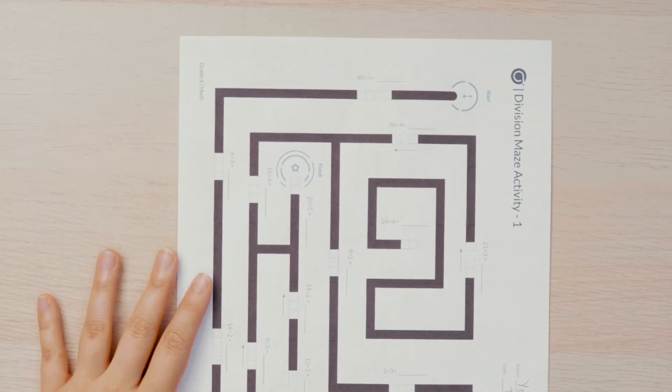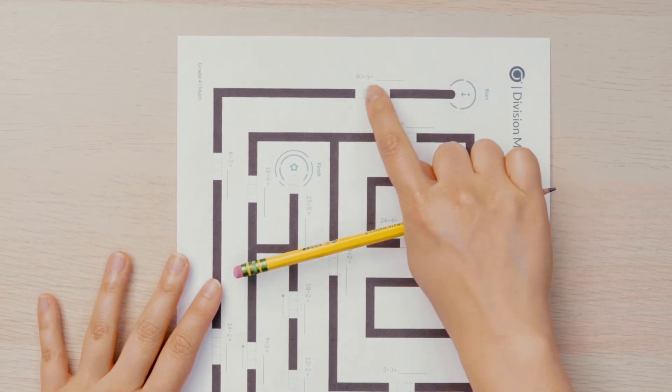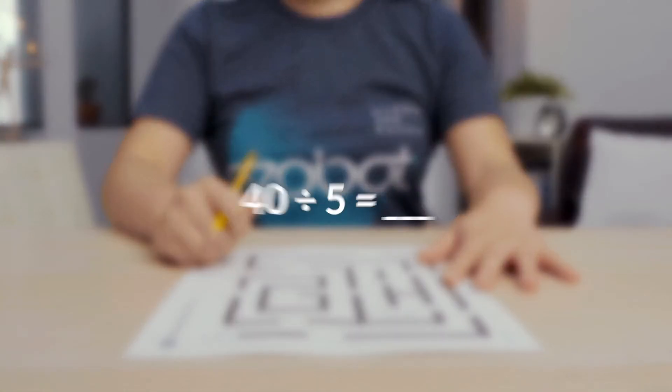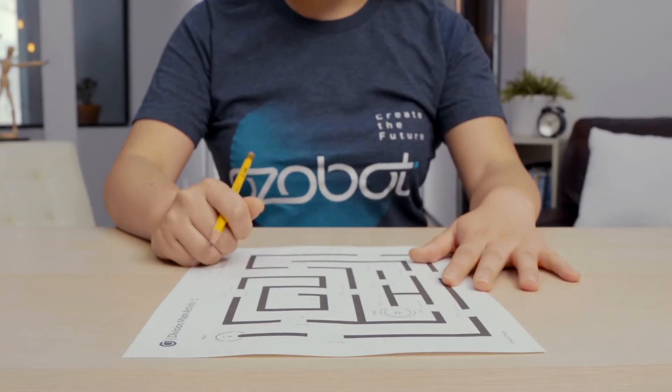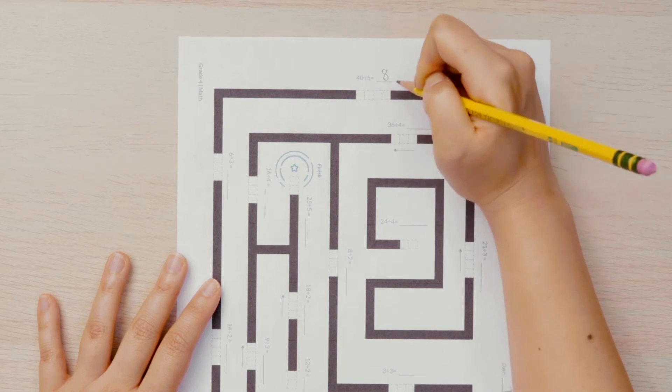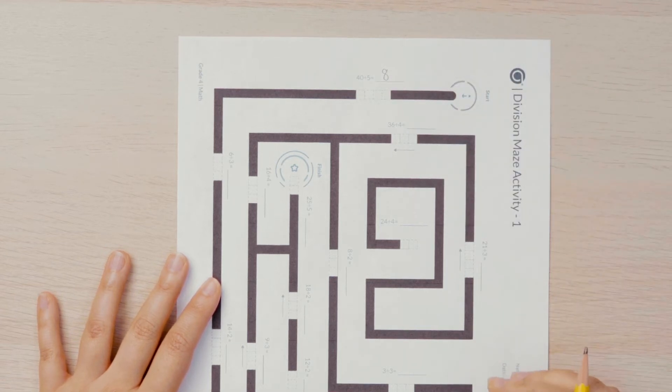On Division Maze 1, the first problem you see is 40 divided by 5. What is 40 divided by 5? That's correct. It is 8. Write the number 8 on the line provided for your quotient.